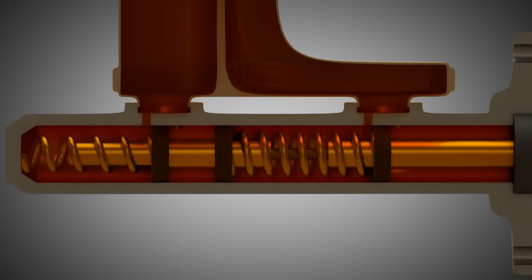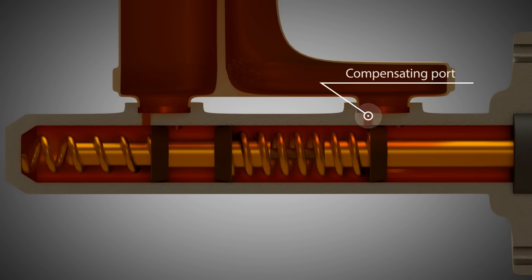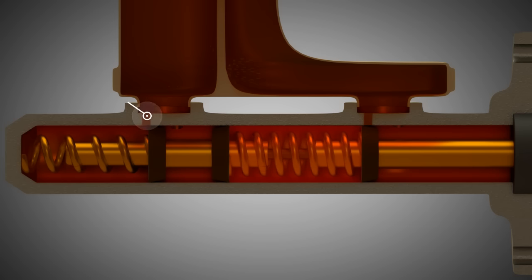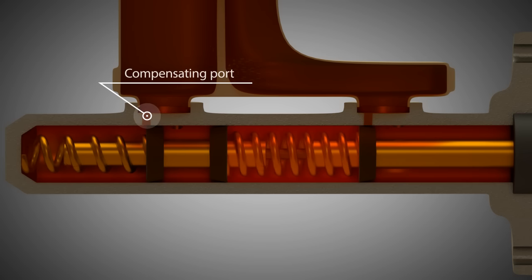As soon as the driver depresses the brake pedal, the push rod pushes the first rubber piston cup over the compensating port. Consequently, pressure builds up in the first brake circuit. As a result, the second rubber piston cup is moved over the second compensating port and pressure builds up in the second brake circuit.